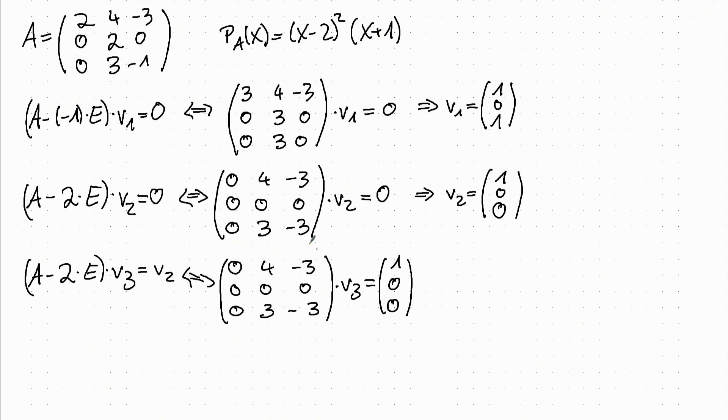And again, we can take the first row and subtract the third row, and then we get the information that the second entry of V_3 has to be 1. And this row again gives us the information that the second entry and the third entry have to be equal. So since the second entry is 1, the third entry also has to be 1.